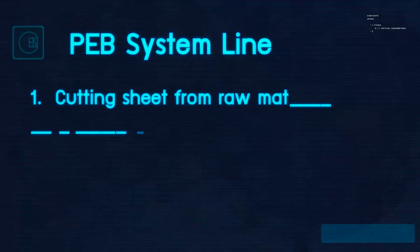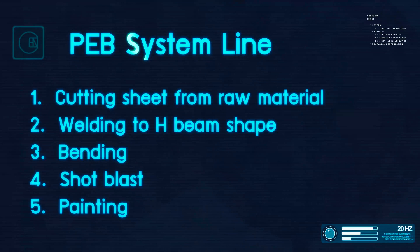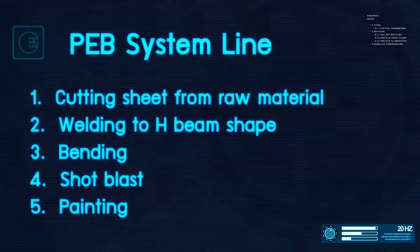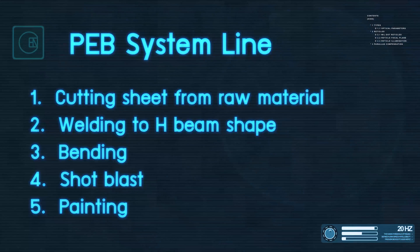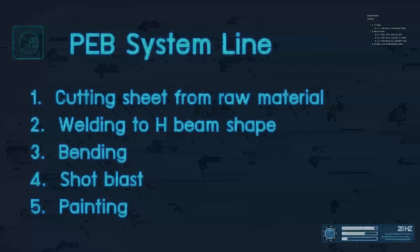Our PEB system line process has 5 main steps: Step 1, cutting sheet from the steel plate; Step 2, weld the steel plate; Step 3, bending; Step 4, shot blast; and Step 5, painting.